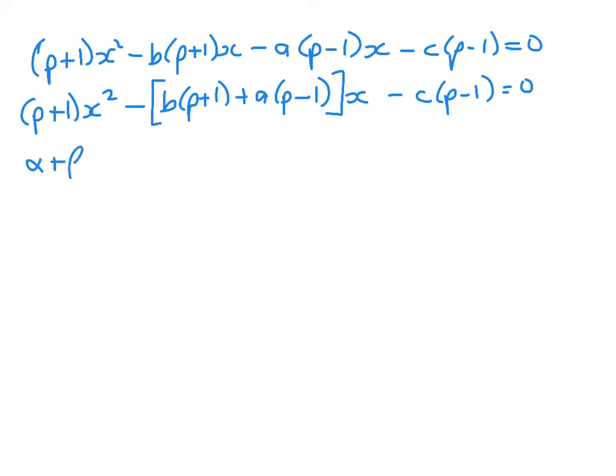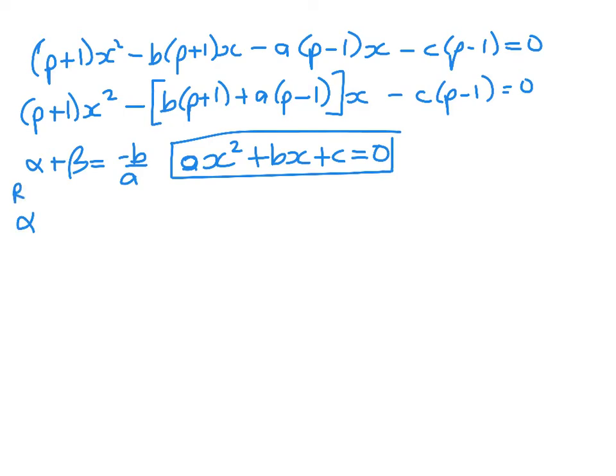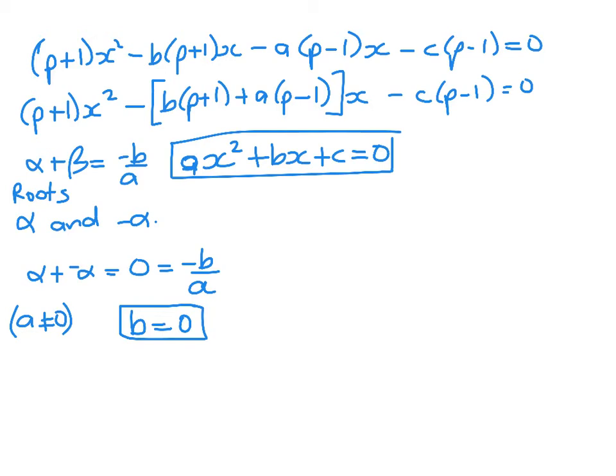Now the sum of the roots in a quadratic is equal to negative b over a. The b and the a are not the same as the b and the a above. The b and the a come from my standard quadratic. Here we know that alpha is the first root and negative alpha is the second root. So that means that alpha plus the second root is equal to 0. So 0 must be equal to negative b over a, and we're assuming since we've got a quadratic, a is not equal to 0. That's a good thing. So that means that b, my second term in my quadratic, is equal to 0.